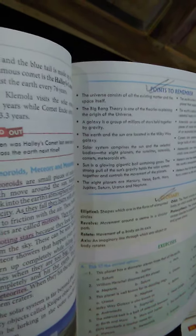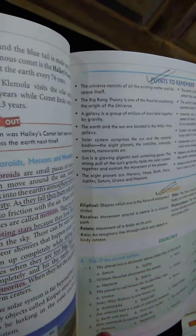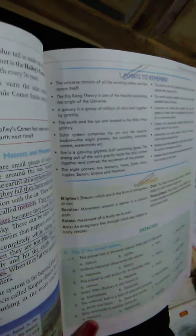Asteroids are called minor planets. They are tiny pieces of rock which are believed to be the debris of an exploded planet.